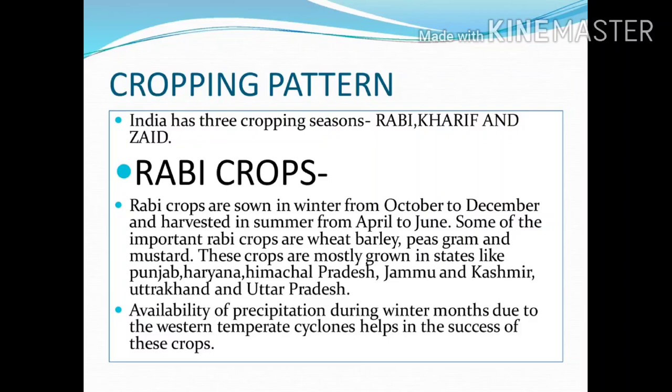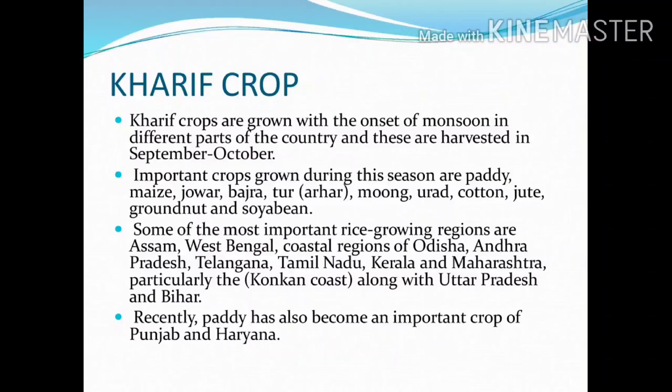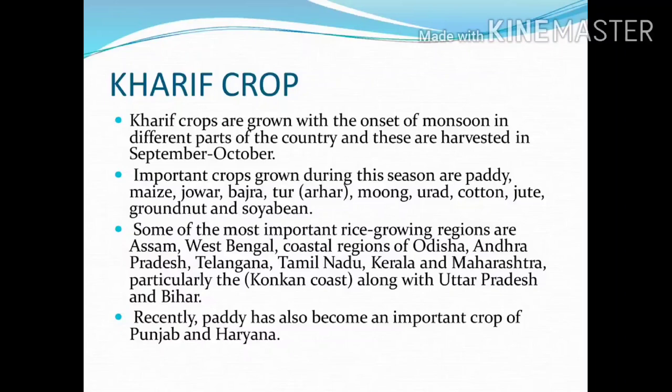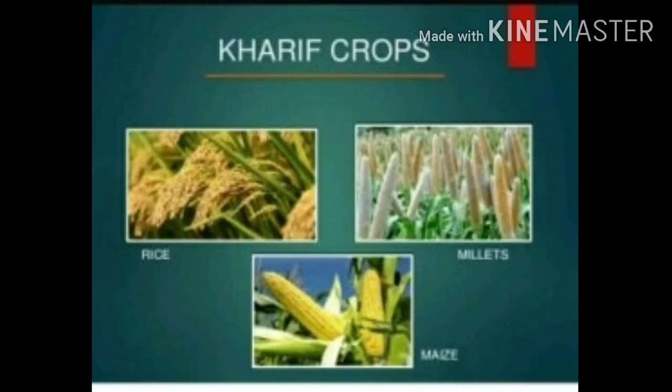Kharif crops are grown with the onset of monsoon in different parts of the country and are harvested in September and October. Important crops during this season are paddy, maize, jowar, bajra, tur, moong, urad, cotton, jute, groundnut, and soya bean. Some of the most important rice-growing regions are Assam, West Bengal, coastal regions of Odisha, Andhra Pradesh, Telangana, Tamil Nadu, Kerala, Maharashtra, particularly the Konkan coast, along with Uttar Pradesh and Bihar. Recently, paddy has become an important crop of Punjab and Haryana.